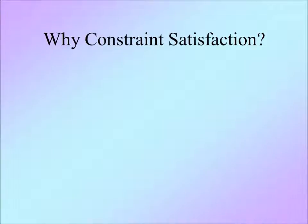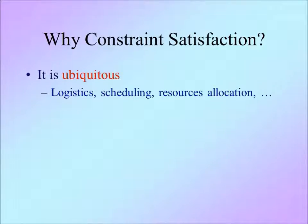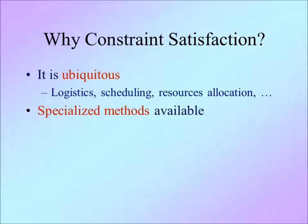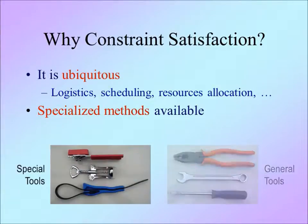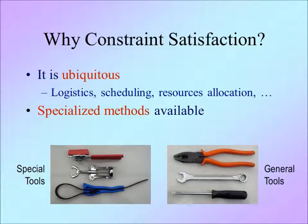Why do people study constraint satisfaction? First, it is seen everywhere. Therefore, general methods developed for solving constraint satisfaction problems can be reused again and again. Secondly, specialized methods can be developed to exploit the features of such problems. Special methods in constraint satisfaction help to solve larger problems quicker. For example, one would not use general tools such as pliers and screwdrivers to open a can — a can opener will do the job better.